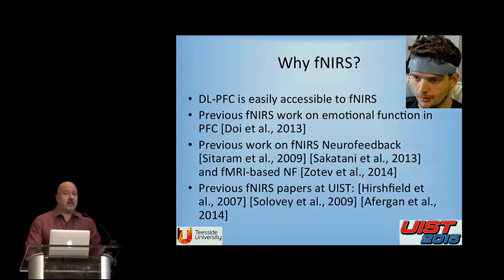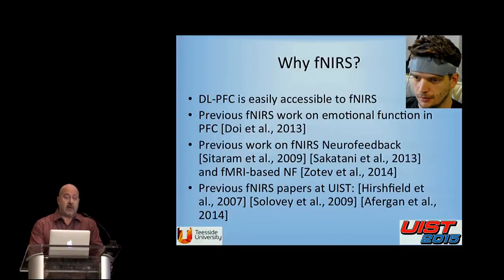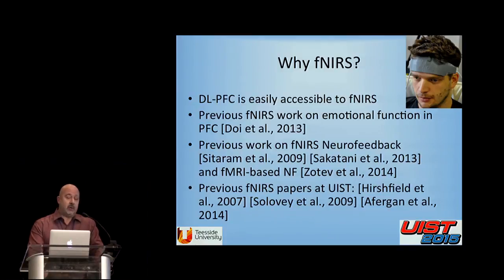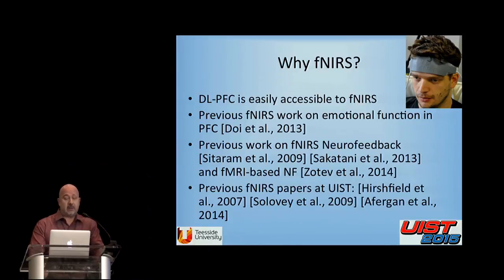The method we use for signal acquisition is functional near-infrared spectroscopy (fNIRS). It's a metabolic method with good spatial resolution, and the dorsolateral prefrontal cortex — the area we're interested in — is easily accessible to fNIRS. There is a lot of previous work in fNIRS on emotional function and it's also amenable to neurofeedback. There are also neurofeedback studies with real-time fMRI, which is also a metabolic technique, and from those studies we derive methodological inspiration.